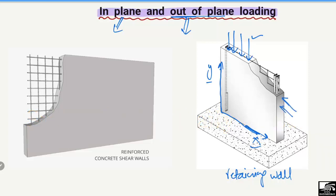For another example, if we consider a wind load or earthquake load acting on the retaining wall along the x-direction — that is, along the plane of the member — this load will also be known as in-plane loading, because it acts in the plane of the member.